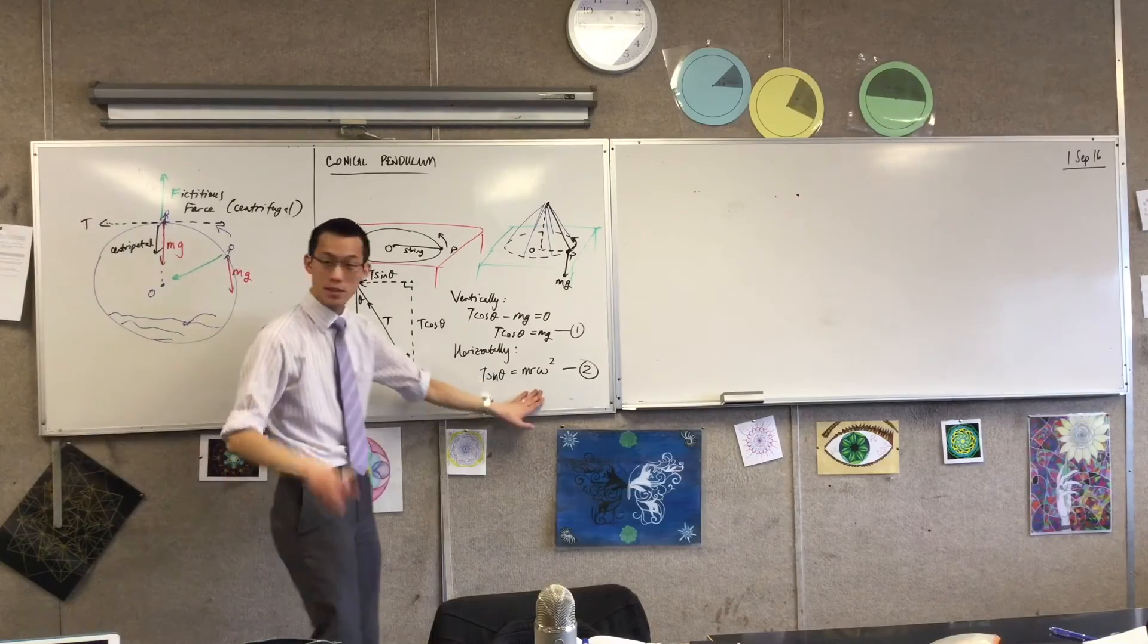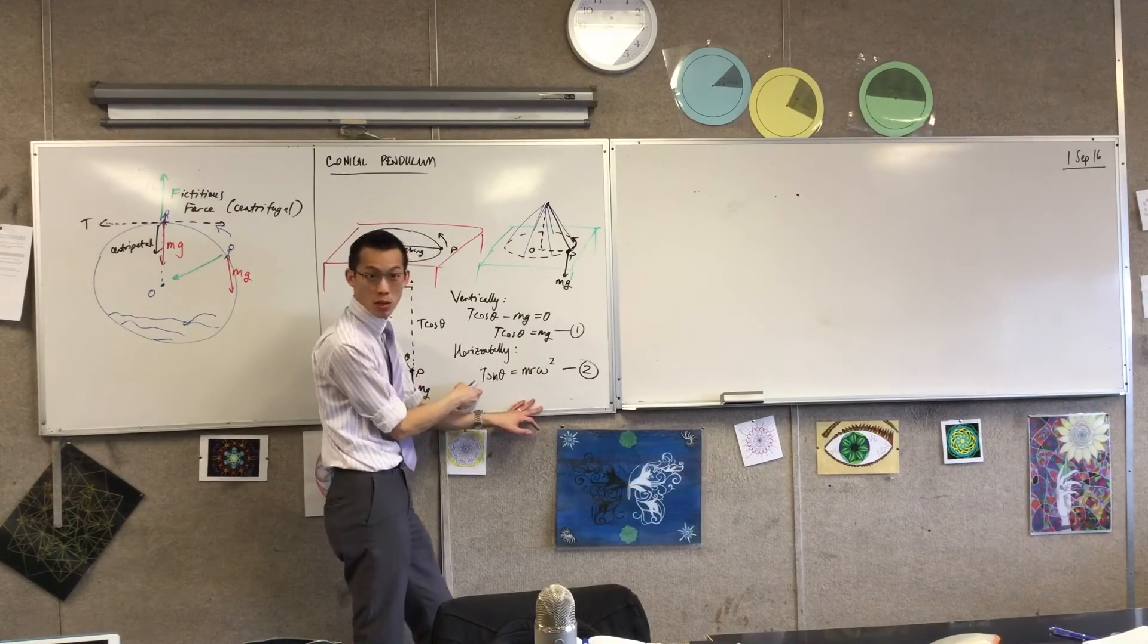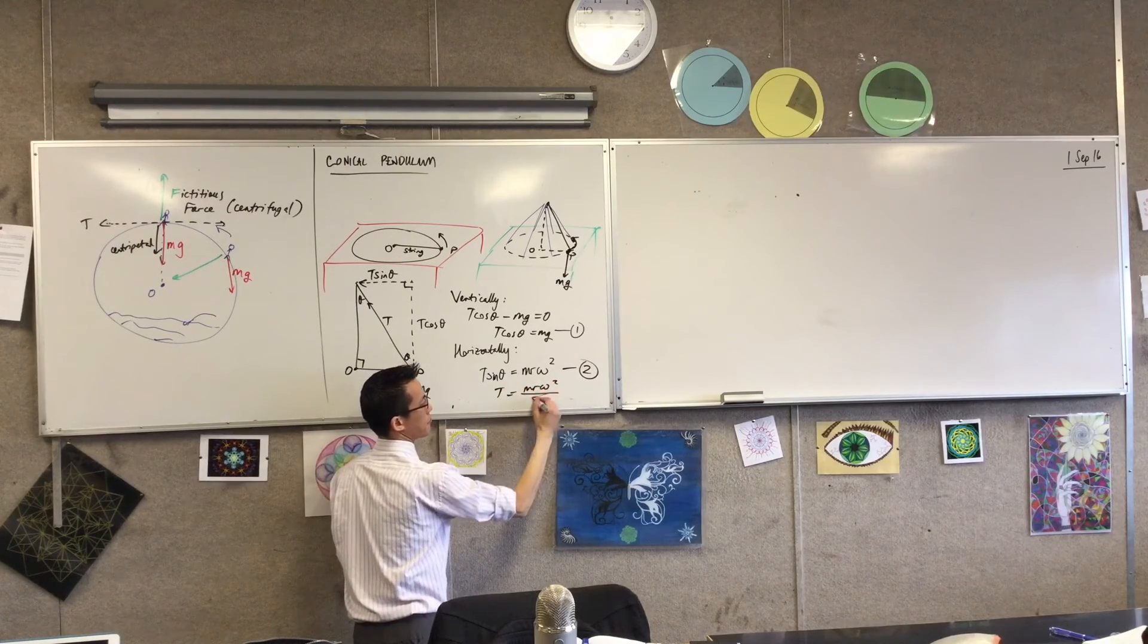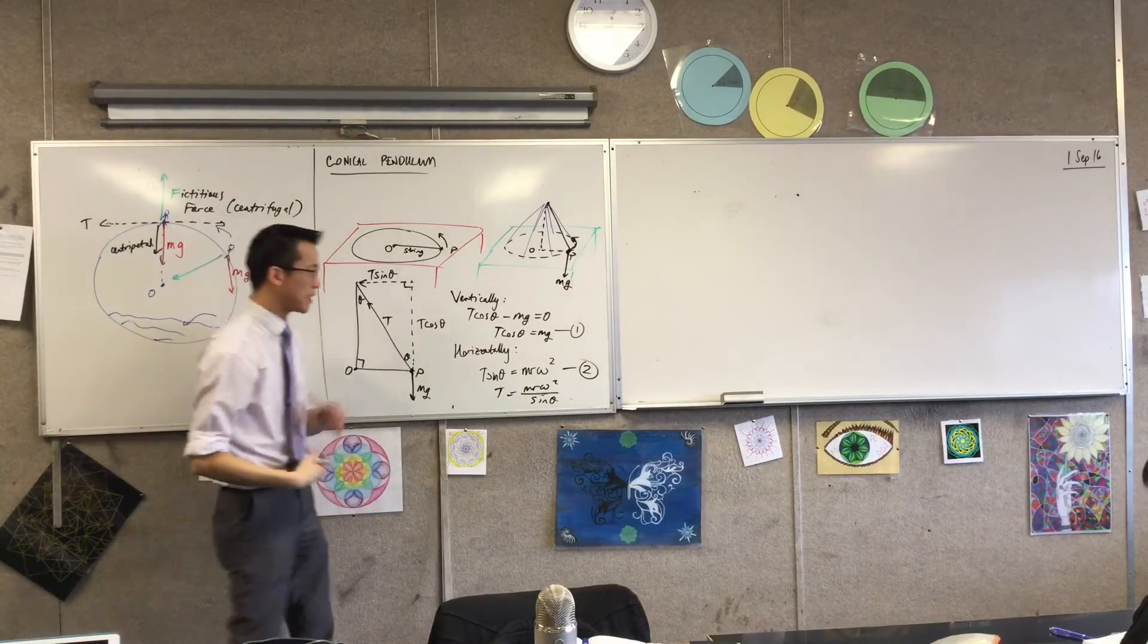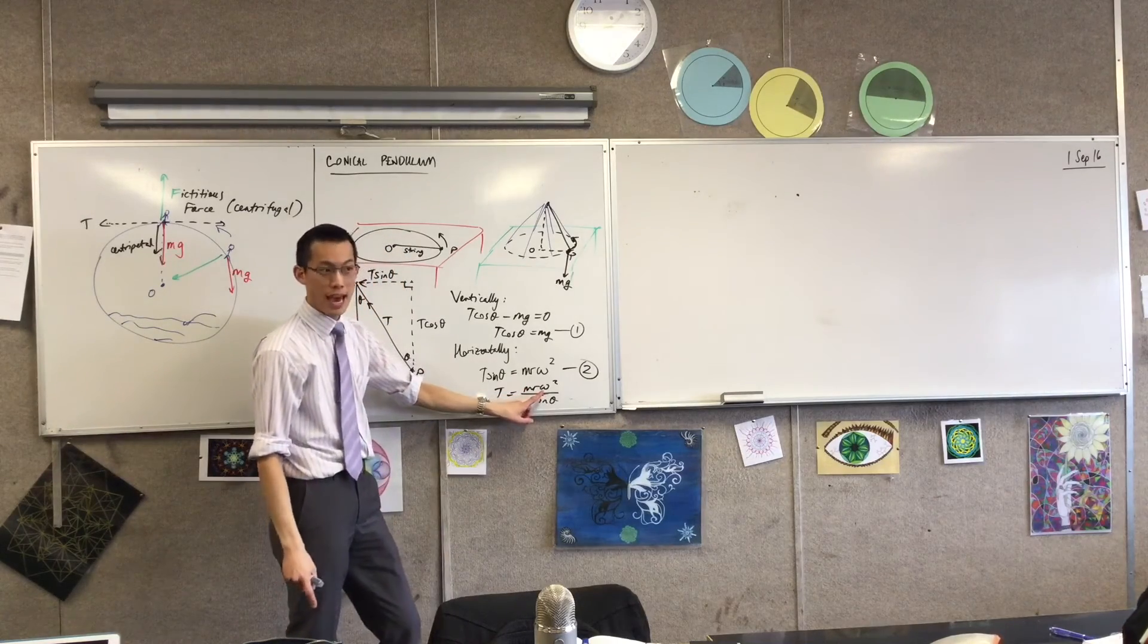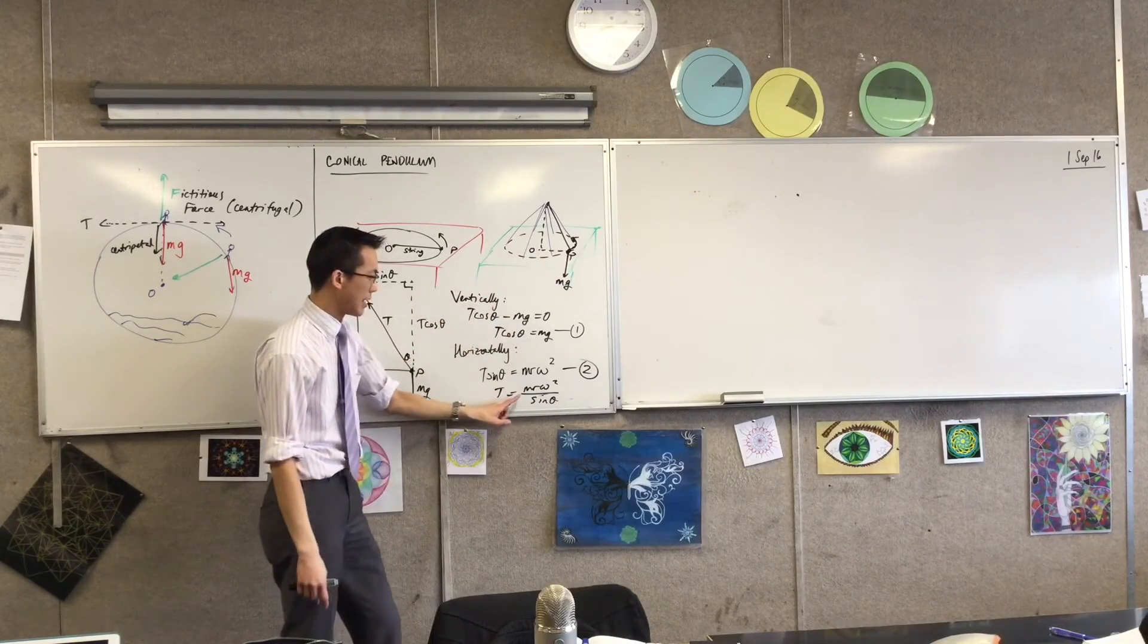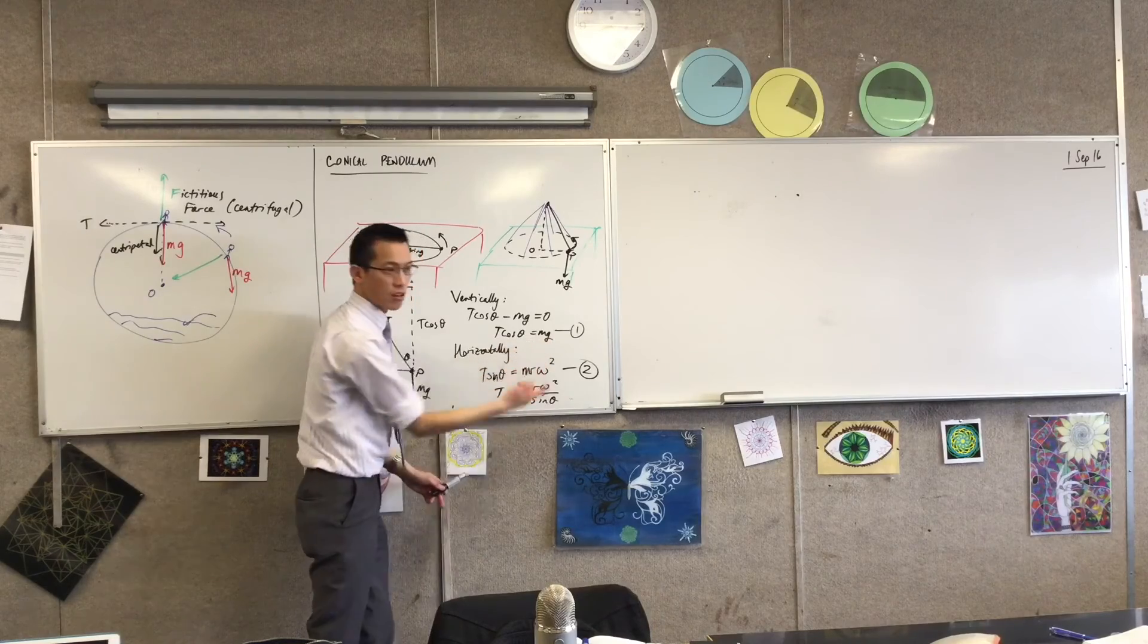m r omega squared is going to be much more useful because then I can say, how will the force change? So I'm going to write this. I'm just going to divide through. This is a superior way of stating the tension because I can now understand what happens to tension as the speed of the angular velocity changes, as the radius of my circle changes, and as the mass changes. Whereas if I wrote this one, T equals mg over cos theta, well, gravity is the same thing. It always is.